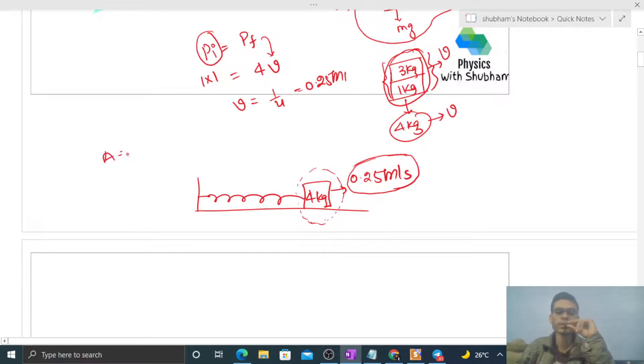At mean position, how much speed is there? Maximum, that is a times omega. Omega will be how much? Under root of k by m.